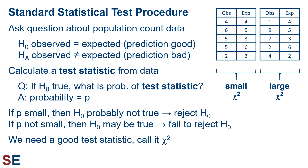To figure out which of these seems correct, we calculate a test statistic from the data. Our question then becomes: if the null hypothesis is true, what is the probability of seeing the test statistic we get? The answer to that question is a probability, p, of the null hypothesis being true. If p is small, then the null hypothesis probably is not true, so we would reject the null hypothesis and go with the alternative. If p is not small, then the null hypothesis may well be true, so we would fail to reject the null hypothesis.